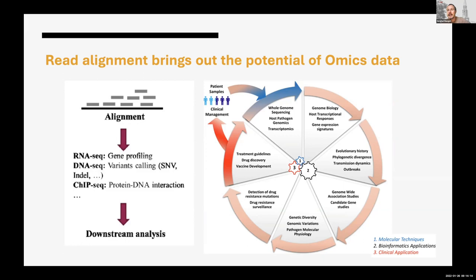Assembly has succeeded for simpler organisms like microbial organisms, but for the human genome it's hard because we have repeats. The human genome has regions that are quite long and repetitive, present across the genome. That makes the problem extremely challenging from a bioinformatics perspective.